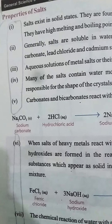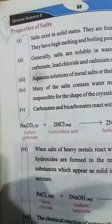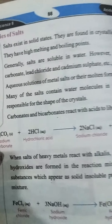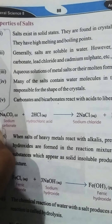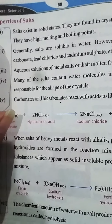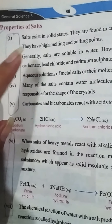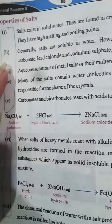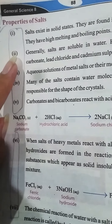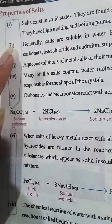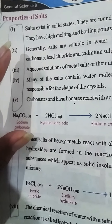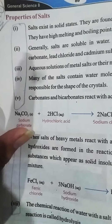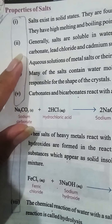Here we have the properties of salts. Salts mostly exist in the solid state and are also found in crystalline and powder form. They have high melting points and high boiling points too. If we discuss the solubility of salts, salts are soluble in water except some of them, such as calcium carbonate, lead chloride, and cadmium sulfate — some of them are insoluble in water.